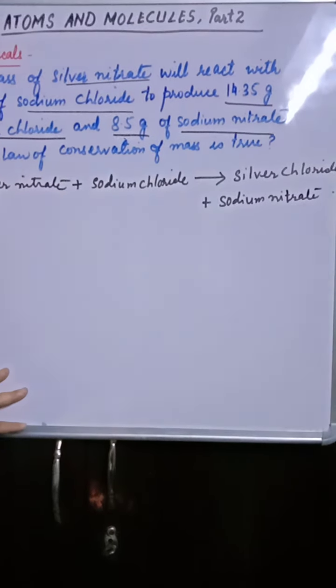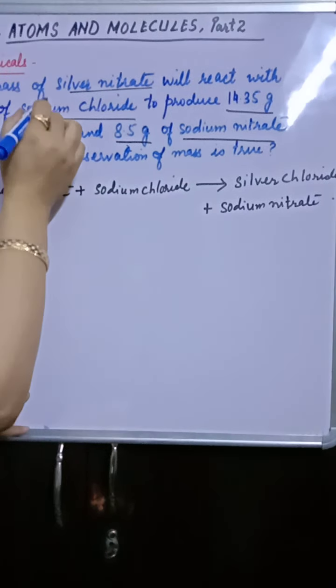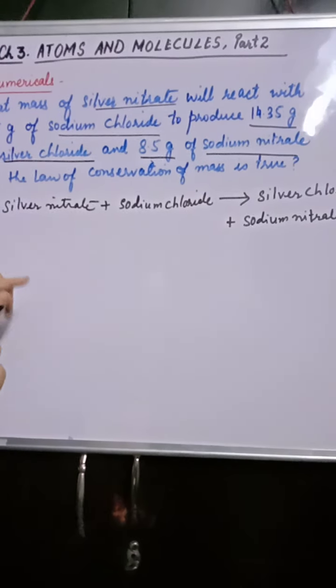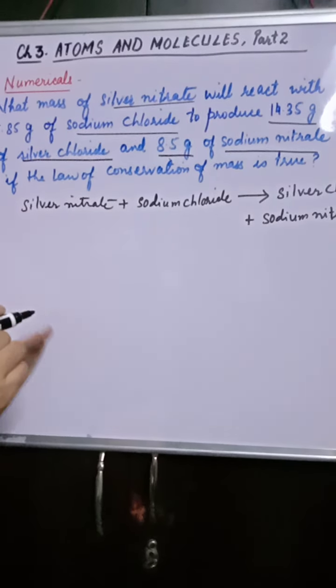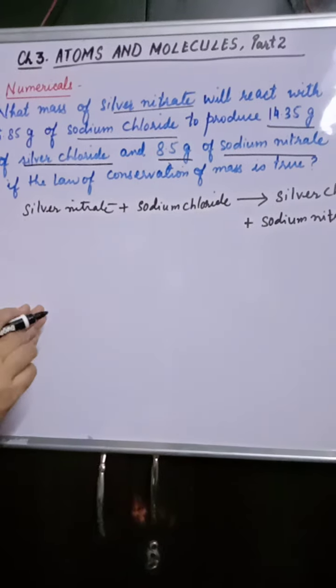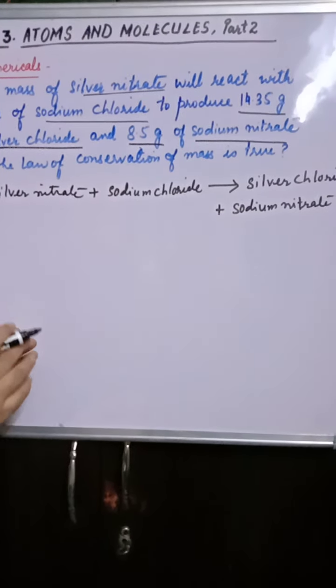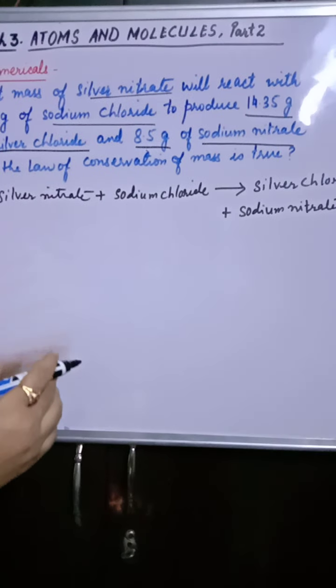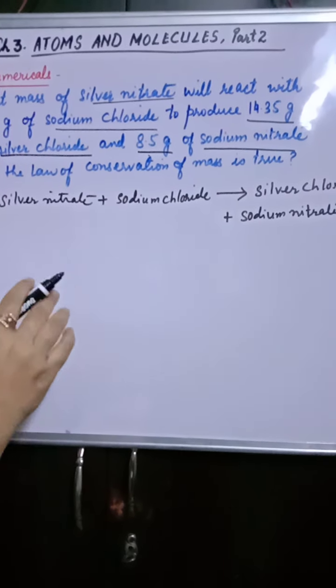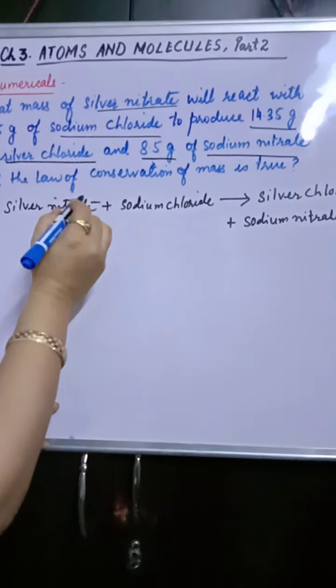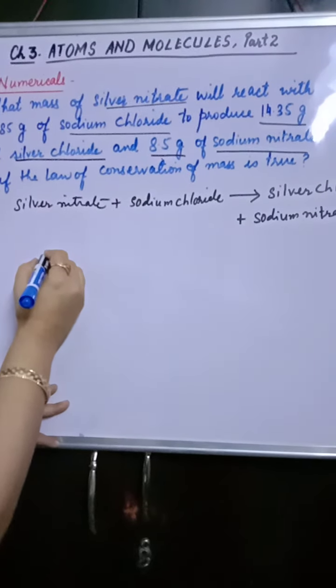Now we have to calculate what is the unknown thing here. Unknown thing is mass of silver nitrate means weight. We can use mass and weight interchangeably in chemistry. But in physics if you use it, it has a different meaning. But chemistry may kabhi-kabhi mass or weight ko hum... Silver nitrate actually, aapko pata nahi hai.